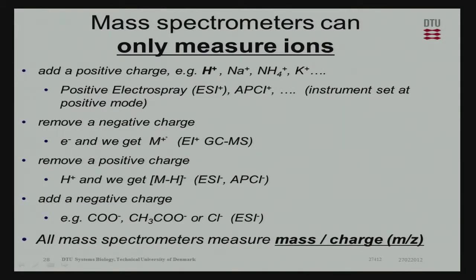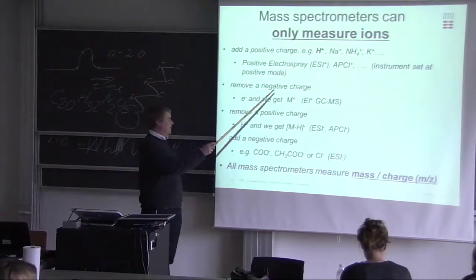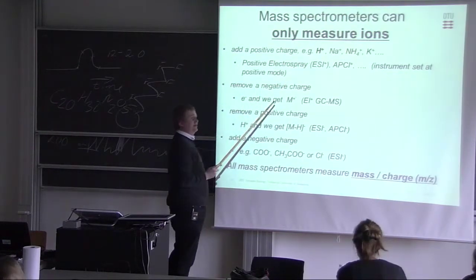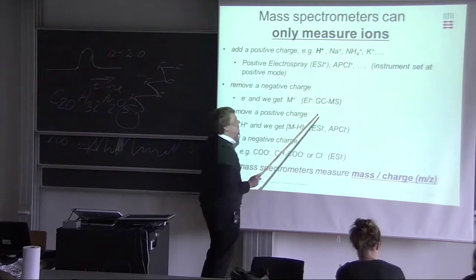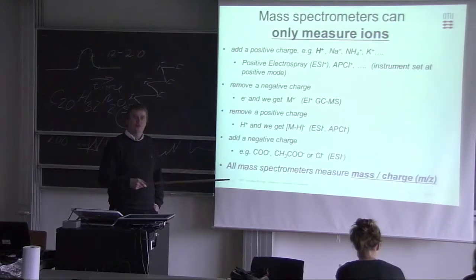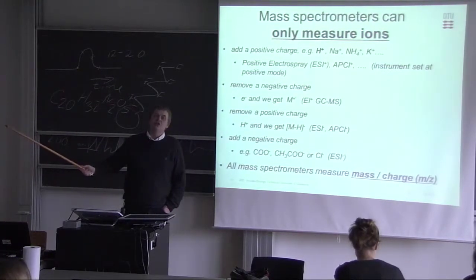So a very important thing about a mass spectrometer is it can only measure ions. It means that most of the things we are working with are neutral molecules, so we have to ionize them. If we don't ionize them, we don't see them. So the first step going to the mass spectrometer is simply the ionization chamber. We can analyze and we can add charges in various ways.